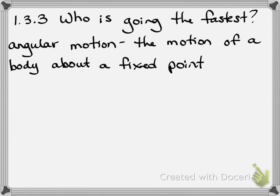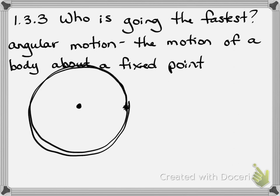The first is this definition of angular motion. It is the motion of a body about a fixed point. So if we have this fixed point right here that's not moving, and we have this body moving about the fixed point at the same distance, going around and around. However far it goes, we could see that as an angle – angular motion. So it's how big is the angle that that body moved.